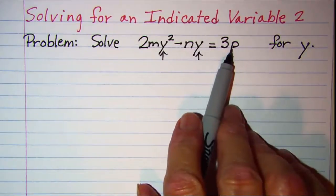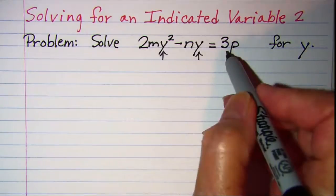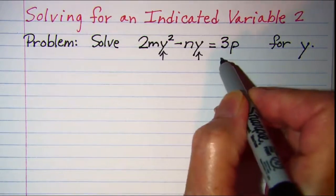I'm going to go ahead and get zero on this side so that I can look at my problem. I'll do that by subtracting 3p from both sides.